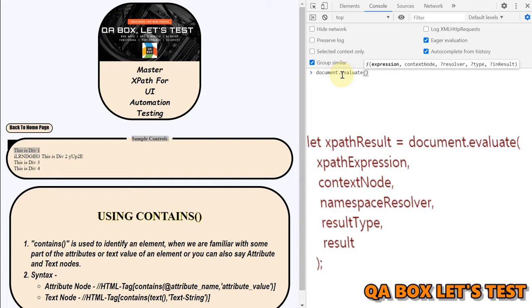Second one is context node. In case of web page, it's always document. Though you can say document.head and you can say document.body. Resolver is nothing because there's no namespaces into HTML page. Then the type is result type. So what type of result you want to return? So I'll say any result, any result of any type. And then in result, we are going to pass null.